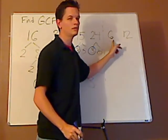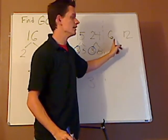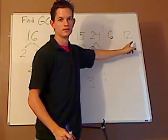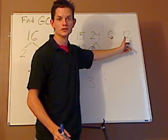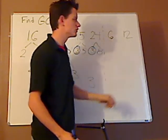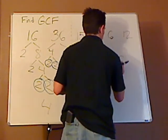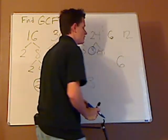With this one, just by looking at it, I know that 6 goes into 12. 12 is just 2 times 6. So, the GCF of 6 and 12 would be 6.